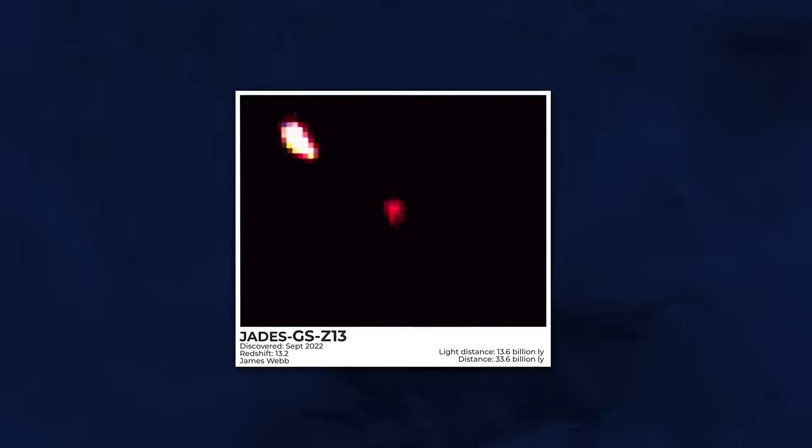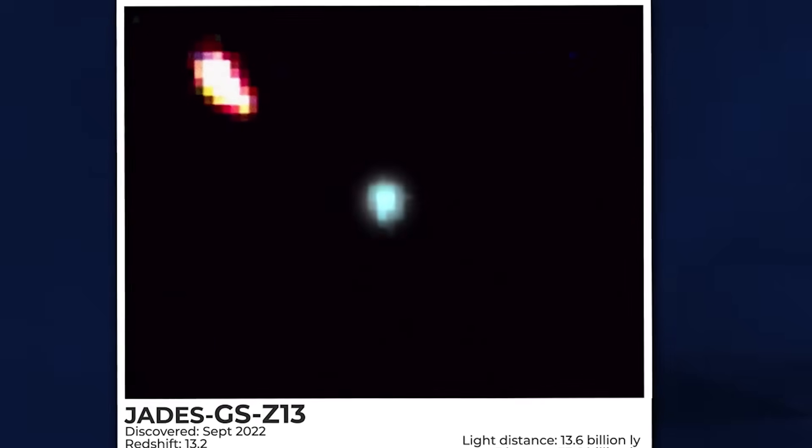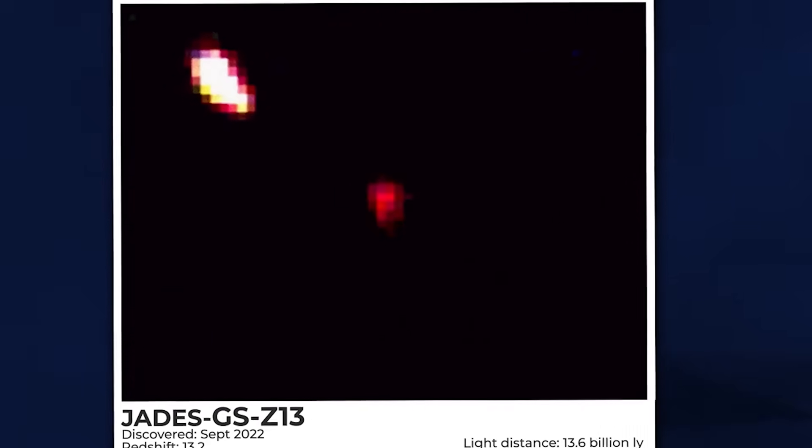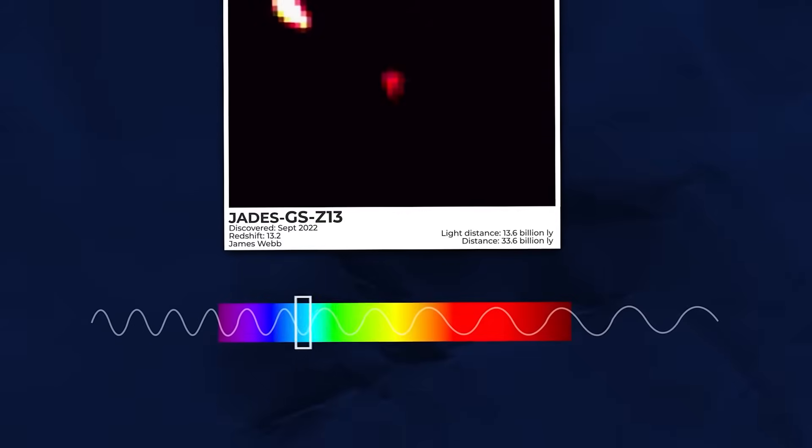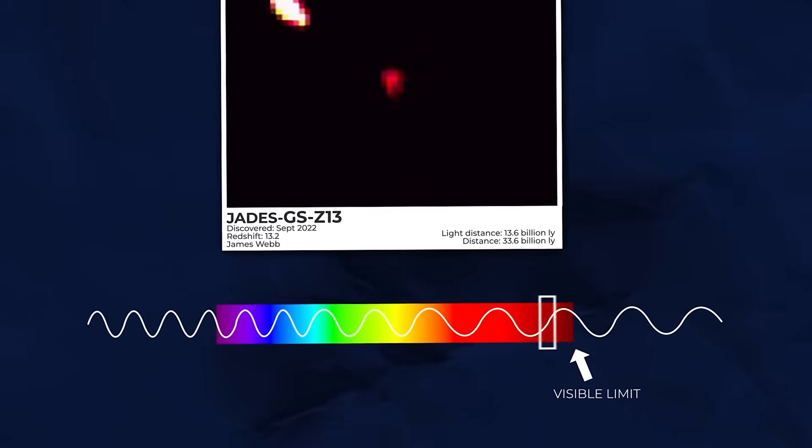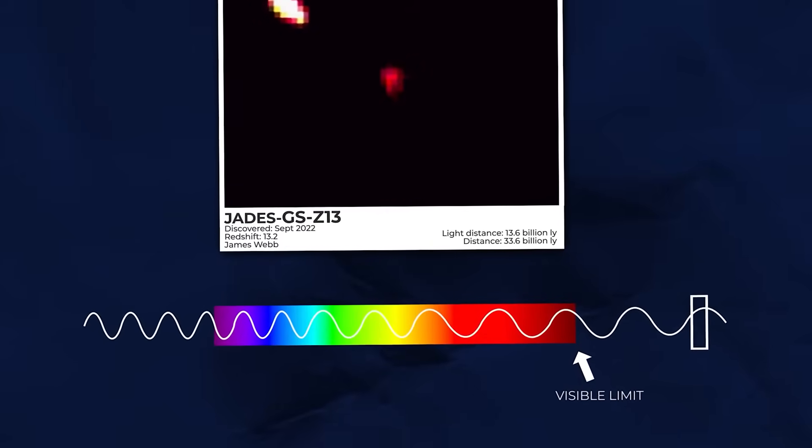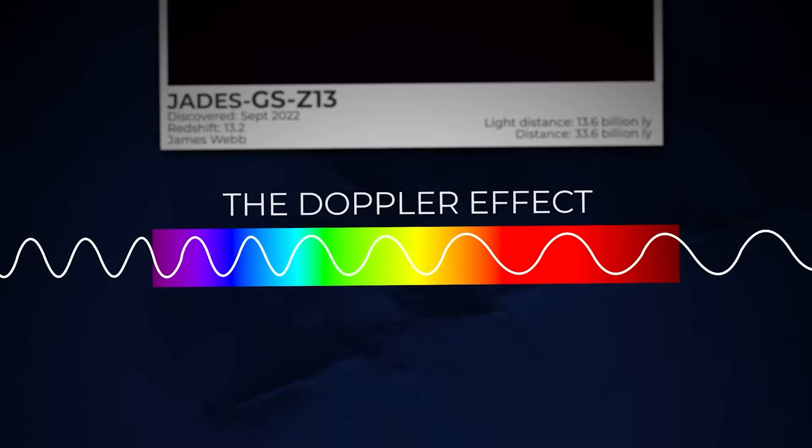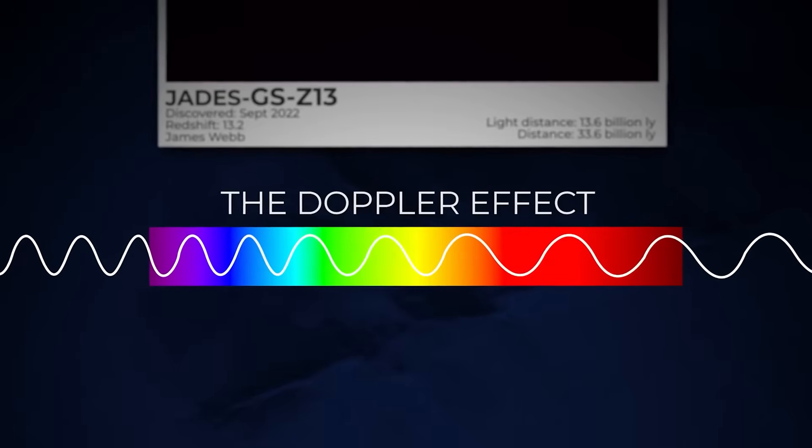When a light source, such as a distant star, moves toward us, the light we perceive shifts towards bluer hues. On the other hand, when the light source moves away from us, the light shifts towards redder hues. This phenomenon is called redshift.